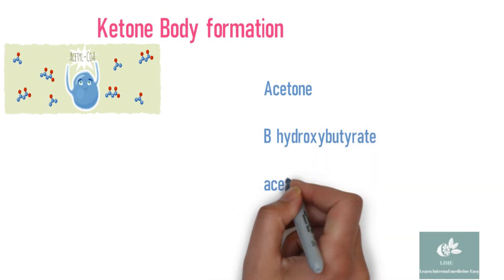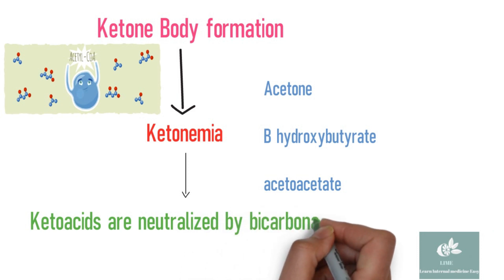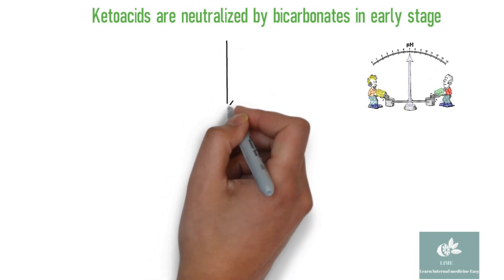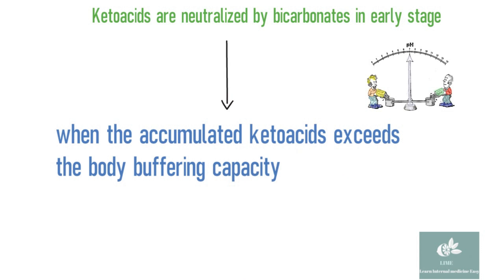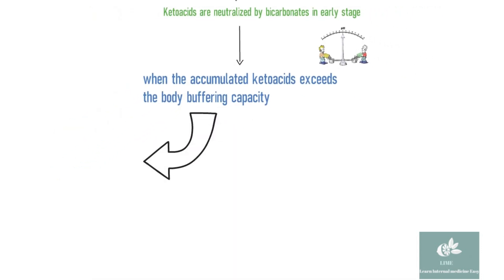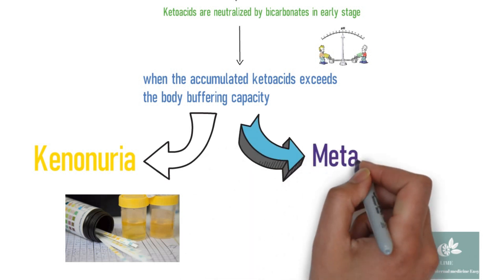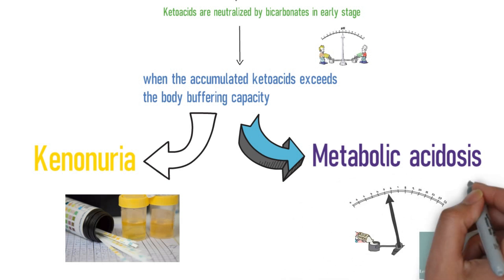Ketone bodies include acetone, beta-hydroxybutyrate, and acetoacetate. This progressive rise in blood concentration of these organic acids leads to ketonemia. These keto acids are neutralized by bicarbonates in early stages. When the accumulated ketone bodies exceed the body's buffering capacity, they overflow into the urine, resulting in ketonuria. If the situation is not properly treated, more accumulation of organic acid results in metabolic acidosis with a drop in pH and serum bicarbonate level.